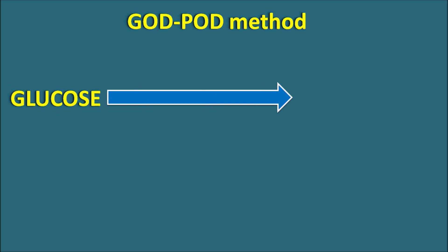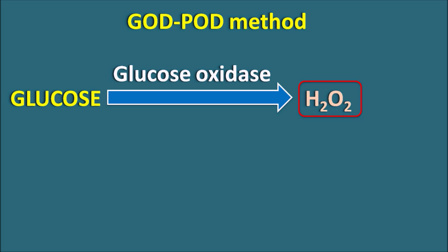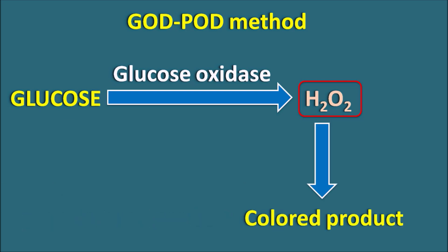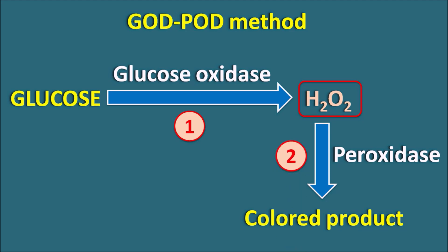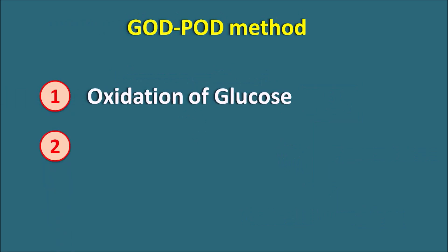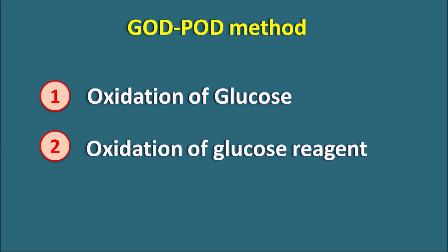In the first step, glucose is converted into gluconic acid by an oxidation reaction, and hydrogen peroxide is released. This reaction is mediated by the enzyme glucose oxidase. One molecule of glucose yields one molecule of hydrogen peroxide. In the second step, this hydrogen peroxide reacts with the glucose reagent to produce a colored product, mediated by peroxidase enzyme. So the GOD-POD method involves these two steps.